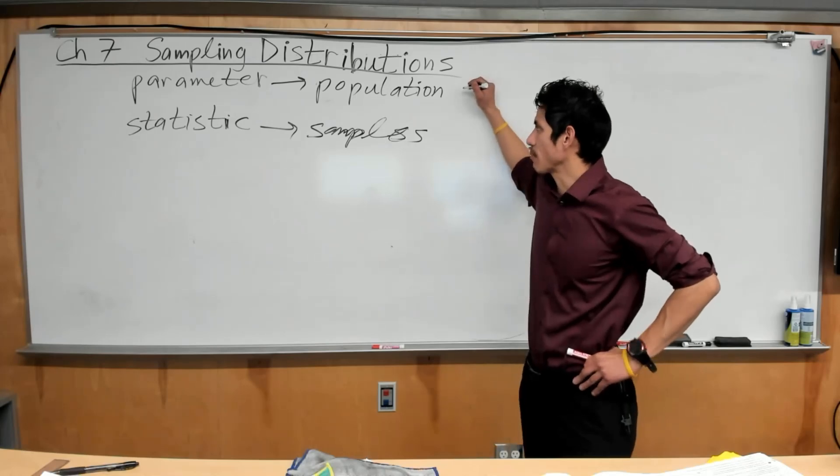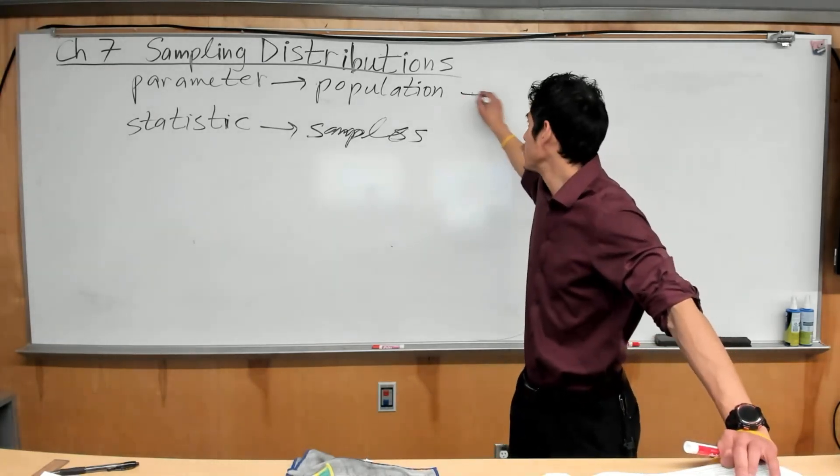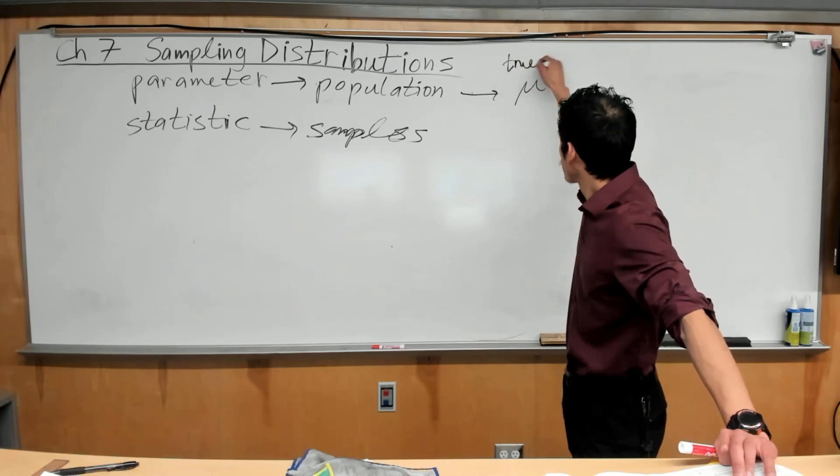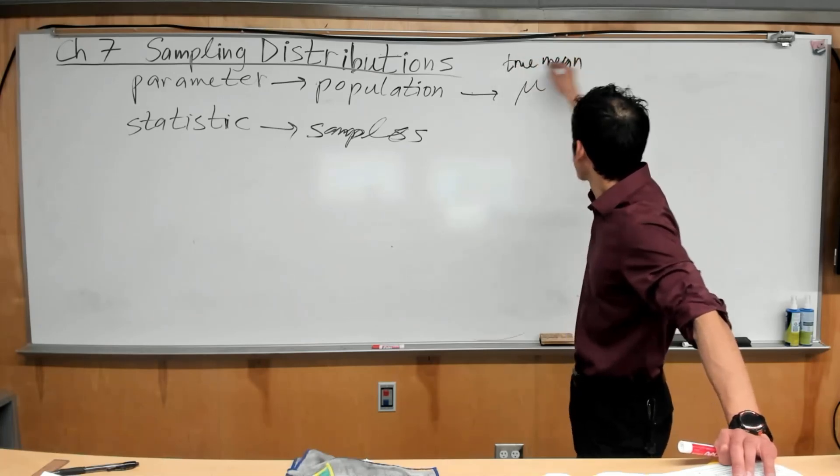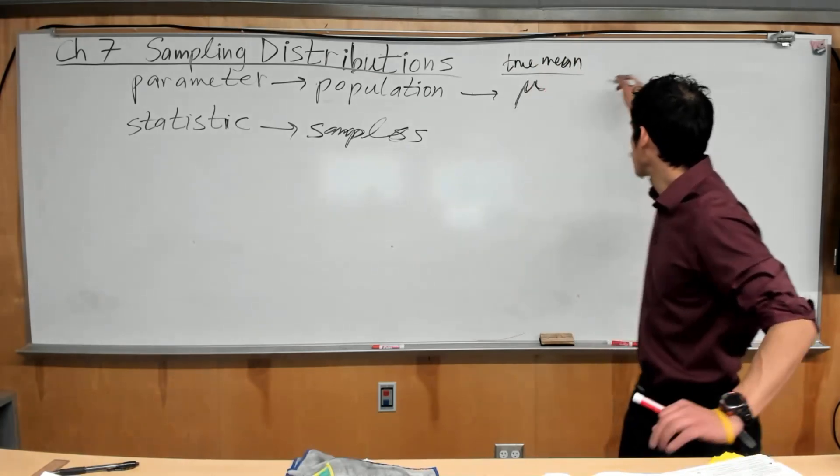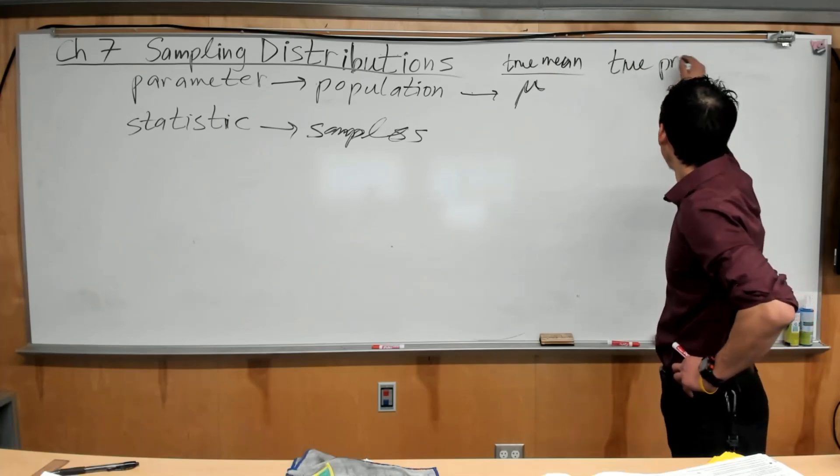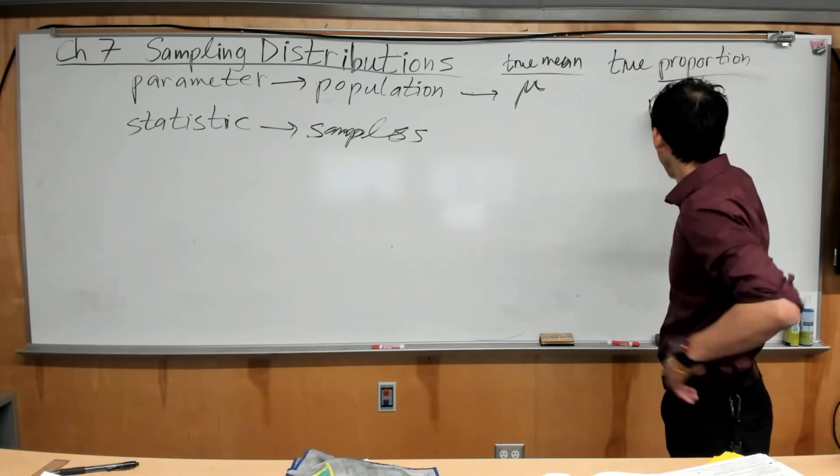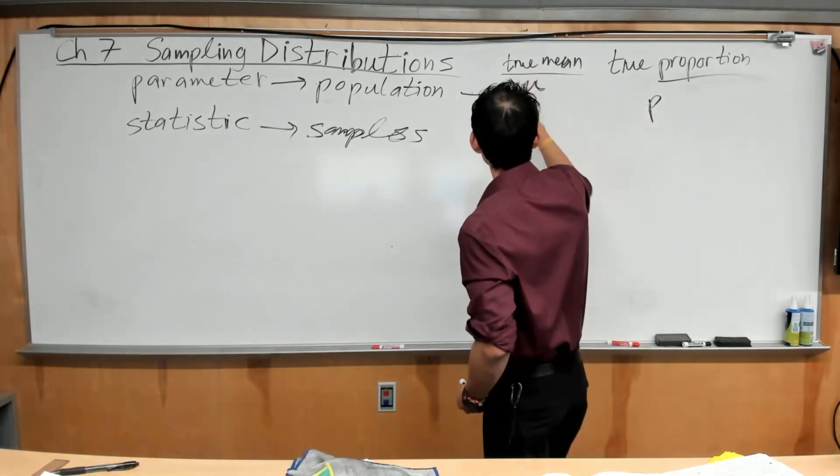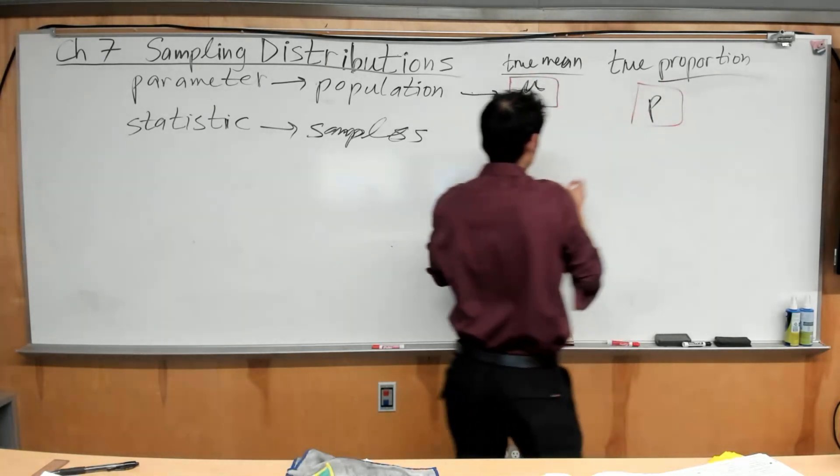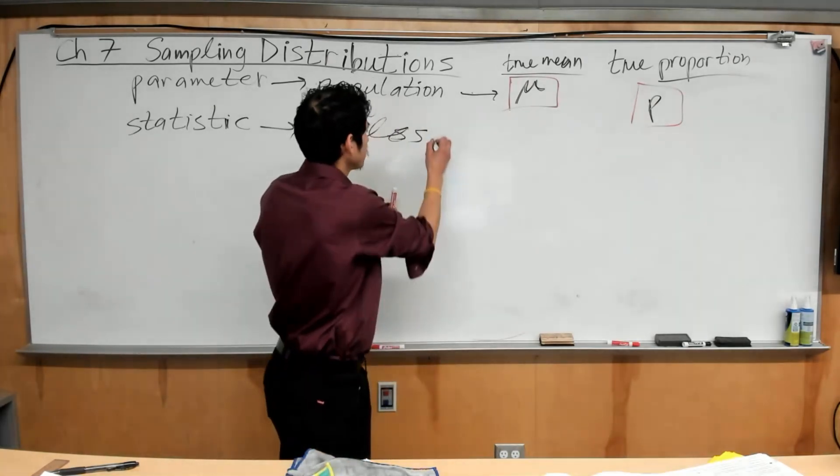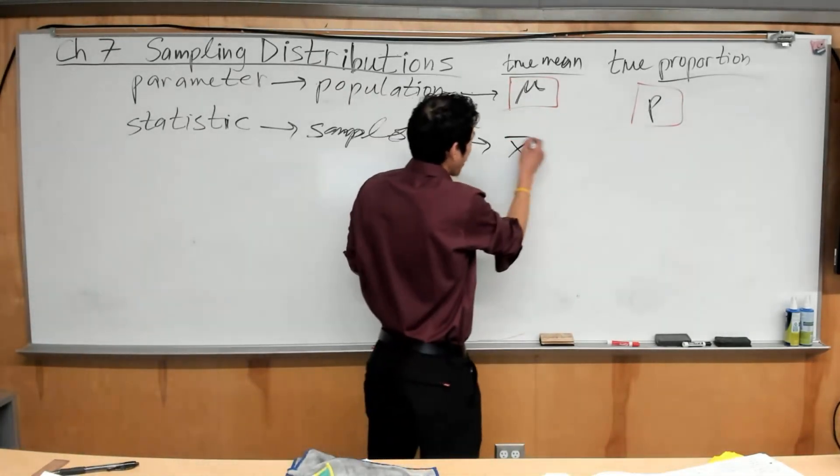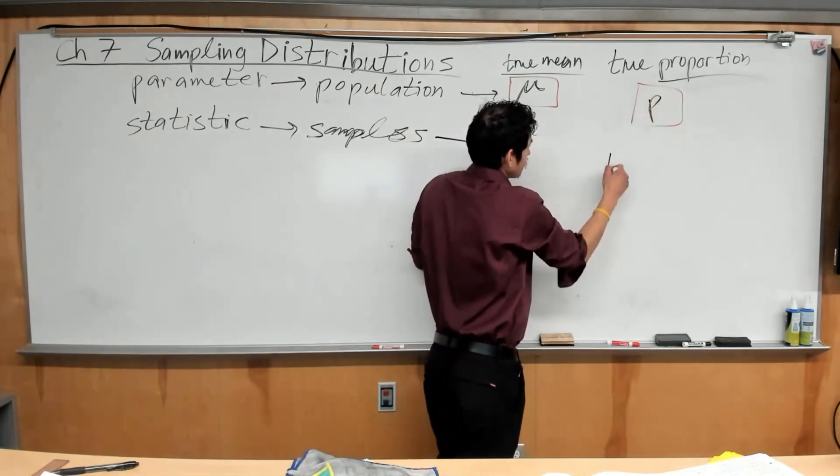Now, when we're talking about parameters dealing with the population, the true values of the mean, we use mu, so true mean mu, and true proportion, we use P. We like to use the Greek letters. Now, for samples, for statistics, we use x-bar, and for sample proportion we use p-hat.